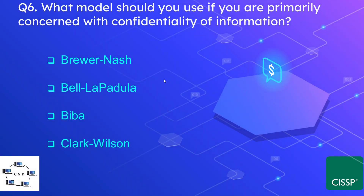Question number six: what model should you use if you are primarily concerned with the confidentiality of information? The options are Brewer-Nash model, Bell-LaPadula model, Biba model, or Clark-Wilson model. The correct answer is the Bell-LaPadula model. Bell-LaPadula is a confidentiality model, while Biba and Clark-Wilson are integrity models.